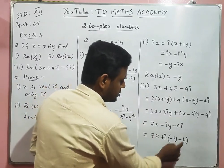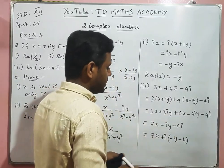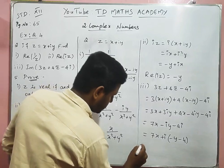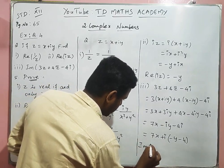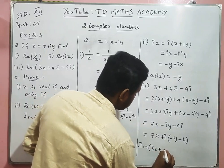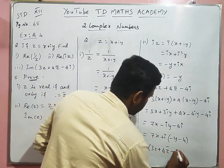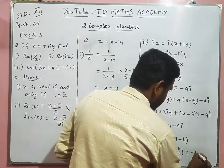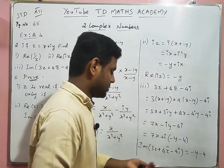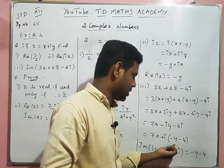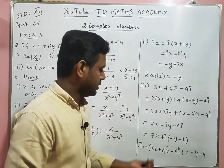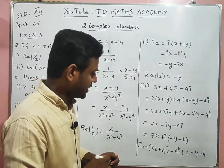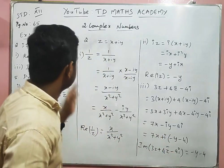So the imaginary part of 3z + 4z̄ - 4i is -(y + 4), or equivalently -y - 4. That completes the first three sums. Next is the fifth sum.